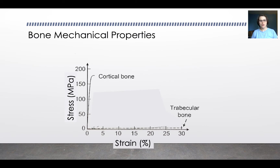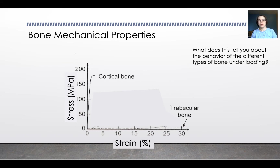Those are the two kinds of bone, and they have really different mechanical properties. Even though they're both chemically very similar, they behave very differently under load. Cortical bone is very stiff and carries load very well, especially in compression. It has an ultimate strength of around 165 megapascals but doesn't compress very much — maybe 2% strain. Trabecular bone, on the other hand, still hasn't failed at 30% strain, so it can crush quite a bit, but it doesn't carry load well — not even above 10 megapascals.